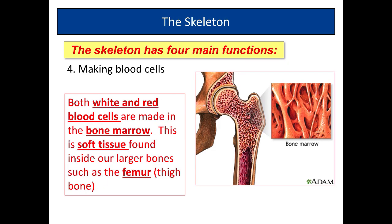And the last function of the skeleton is to make red blood cells. Here's the bone marrow. The bone marrow is found inside. Remember we talked earlier about living tissue? Both white and red blood cells are made in what we call the bone marrow, which is something your dog will love. This is soft tissue, which we mentioned earlier, found inside a larger bone, such as the femur, which is the thigh bone.